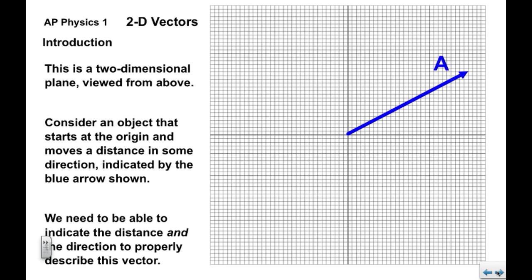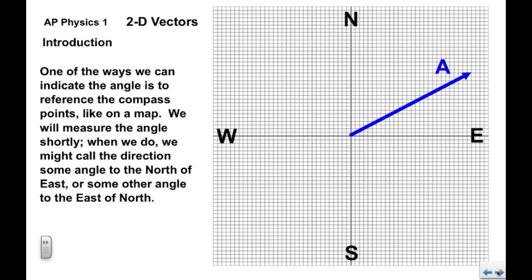We need to be able to indicate the distance and the direction to properly describe this vector. One of the ways we can do it, at least to indicate the direction, is to reference the compass points like on a map.